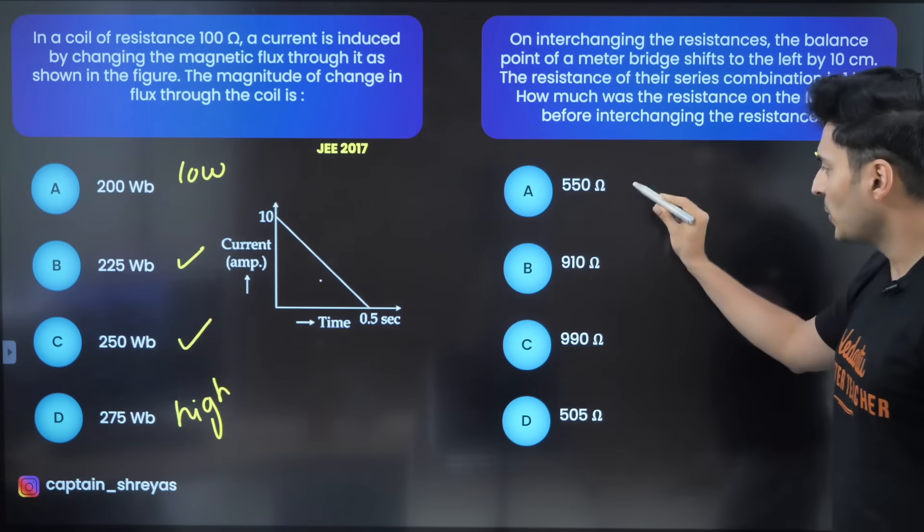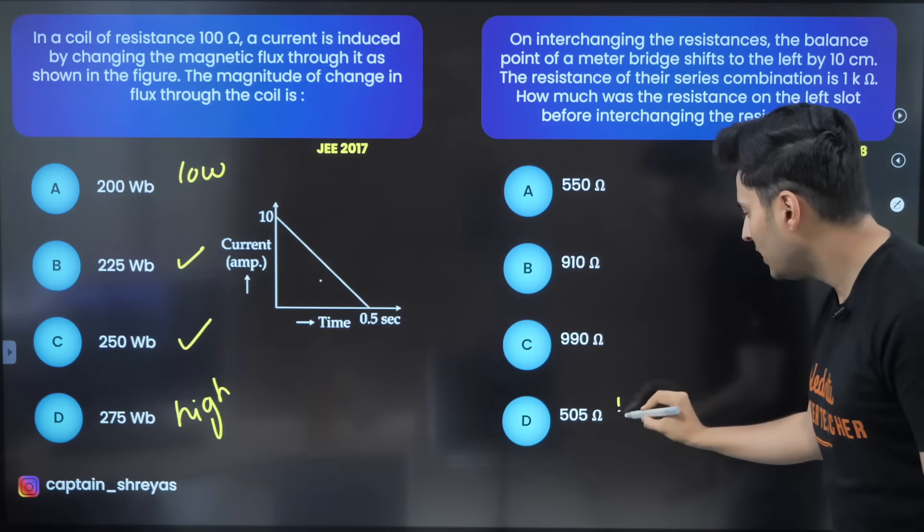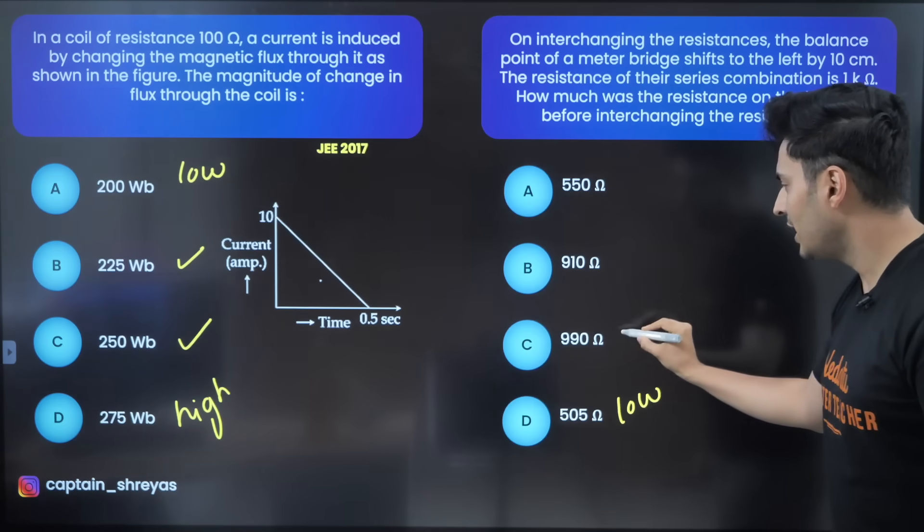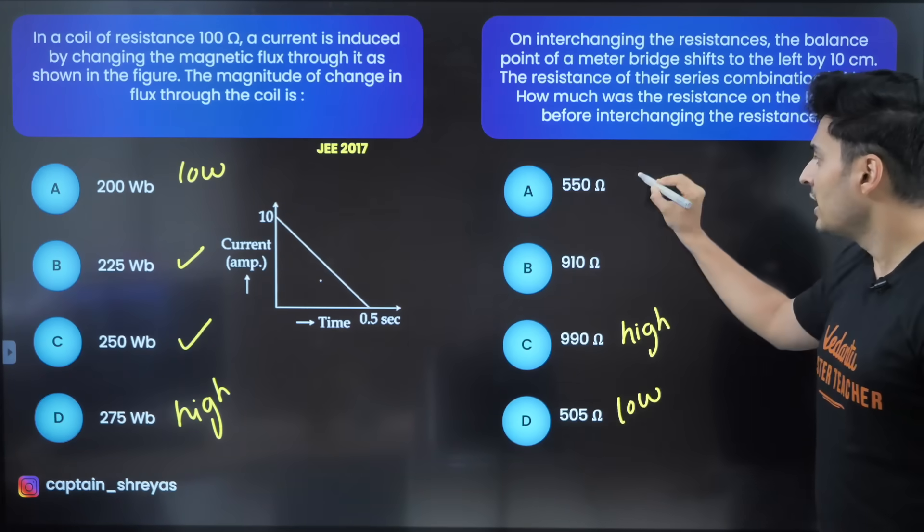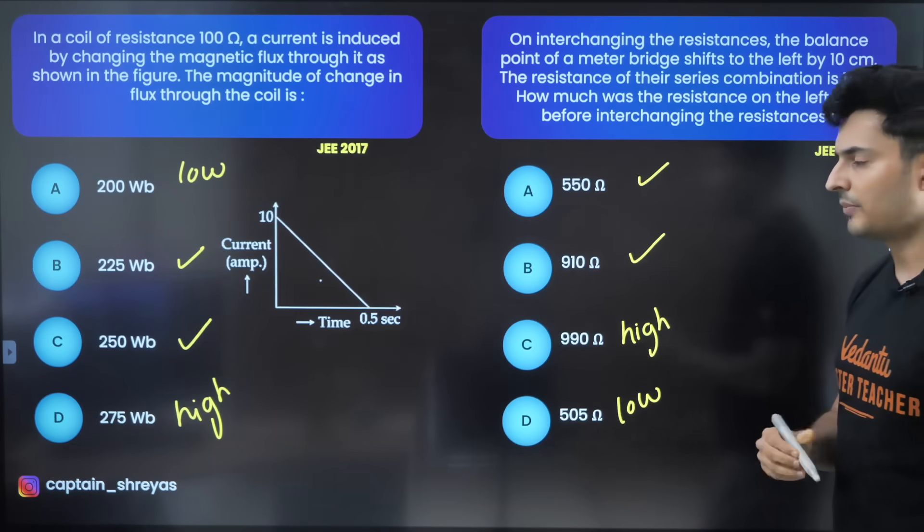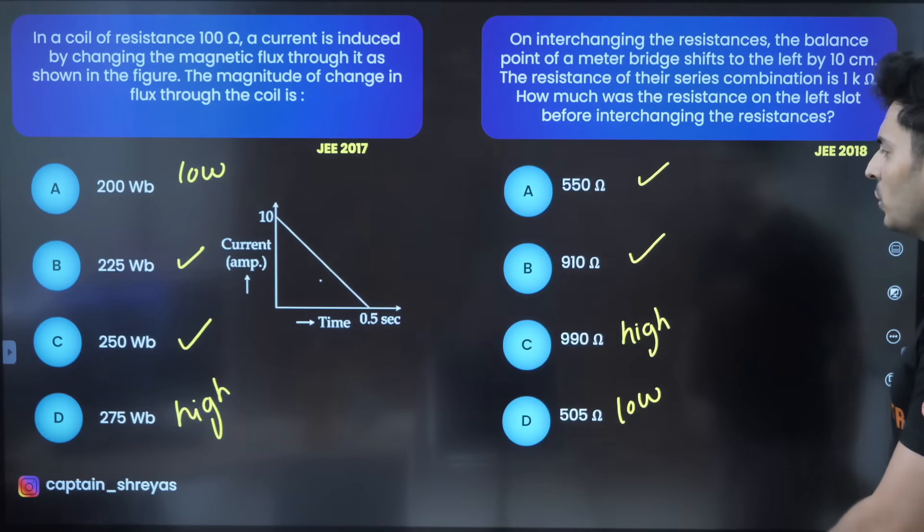Now in these four options you can see that 505 is the lowest value and 990 is the highest value. So discard these two options, it will be either option A or option B. Make a calculated guess, it's up to you which one you want to go with.